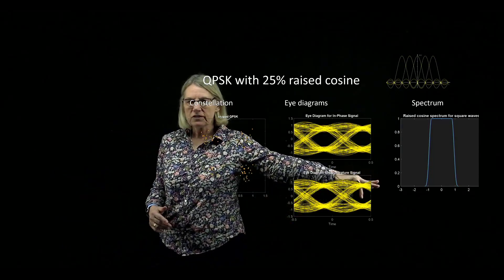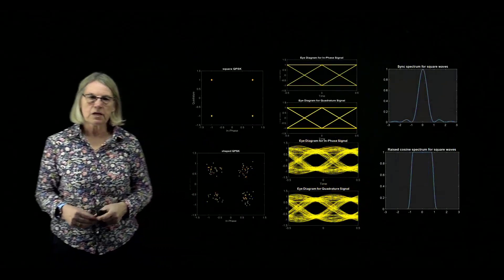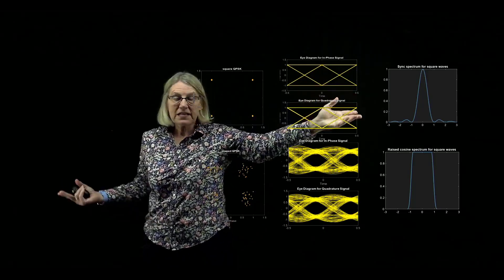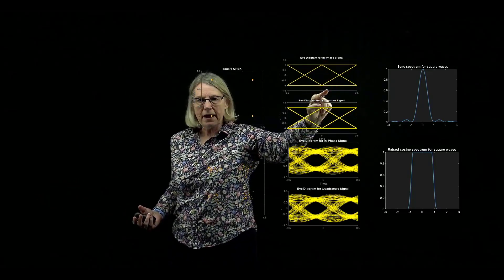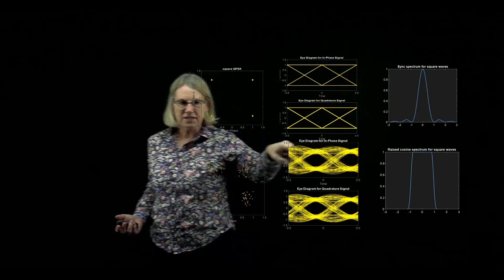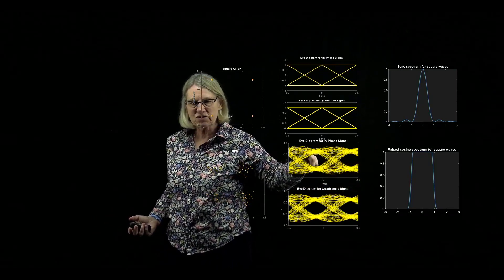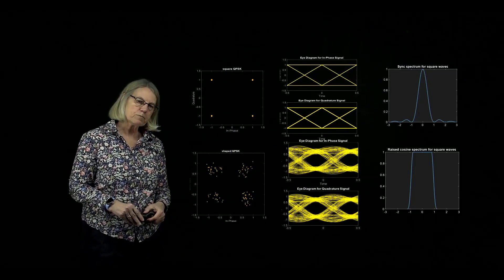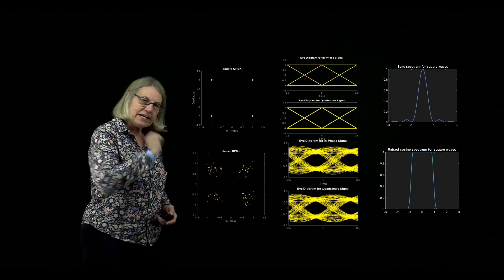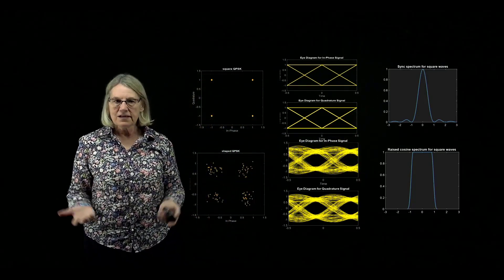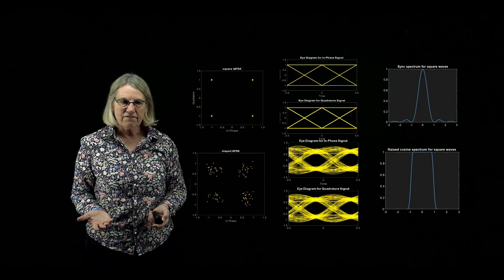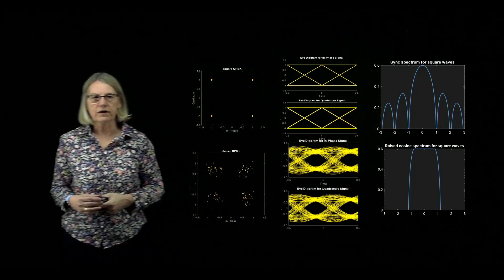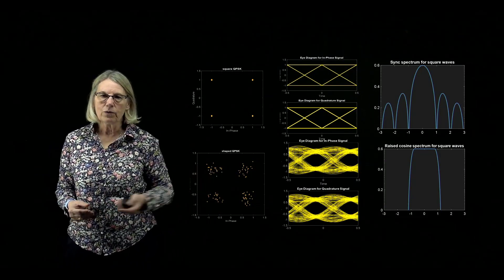Raised cosine has very good frequency domain properties, so let's bring the two together for comparison. With square pulses the eye opening is as large as it can be because the values are absolutely plus 1 and minus 1. With raised cosine the average value is still plus 1 or minus 1, but there is some thickness, so the eye opening is smaller. In the log scale for the frequency domain it becomes quite clear that there is significantly less occupied bandwidth with the raised cosine.